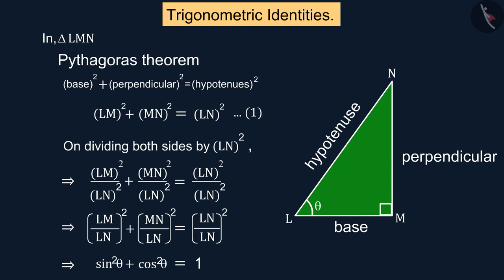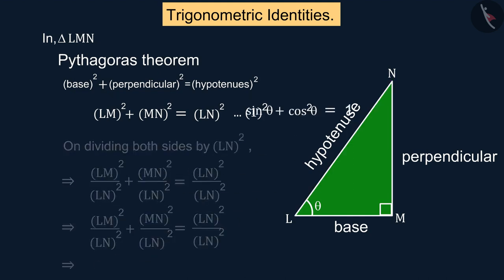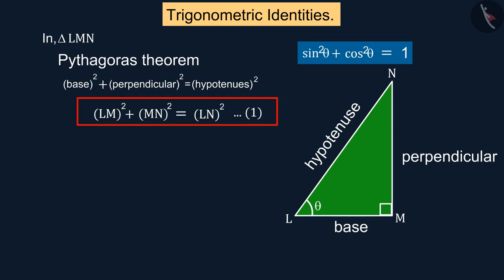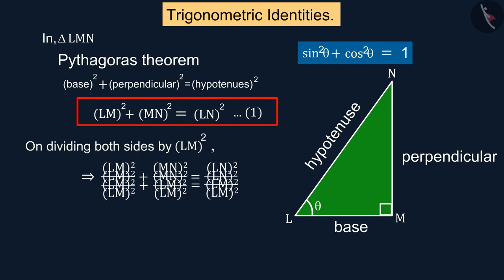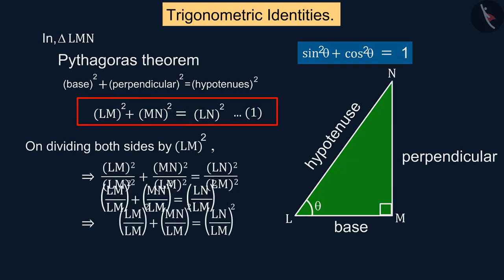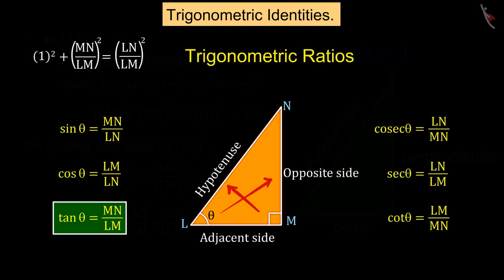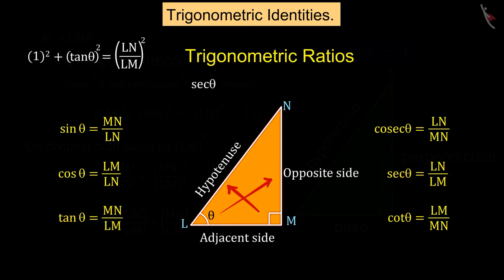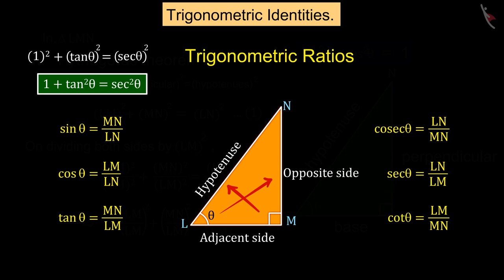What if we divide by the square of LM instead of the square of LN in equation 1? Let's see. The following equations are obtained by dividing the square of LM on both sides of equation 1, where we use trigonometric ratios tan θ equals to MN upon LM and sec θ equals to LN upon LM, from which we get 1 plus tan² θ equals to sec² θ.